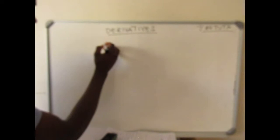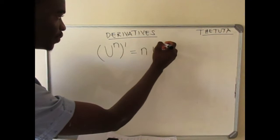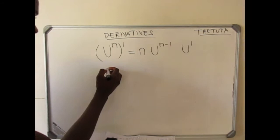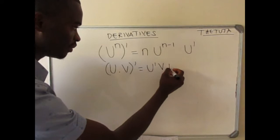Chain rule: let's say for instance we have a function u and you have to differentiate it. You drop the power, then you take u to the n minus 1, then you derive your function u. And then you have your product rule: when you have two functions u and v stuck together, you derive u times v plus u times the derivative of v.